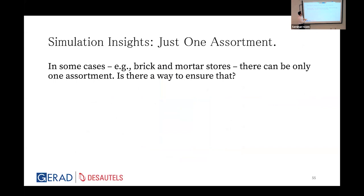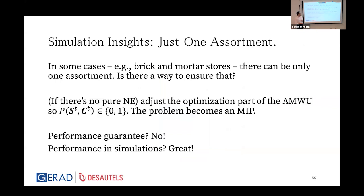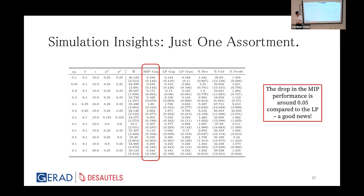For the brick-and-mortar extension: these stores cannot randomize — they need just one assortment. If a pure Nash equilibrium exists the solution is immediate. If not, we modify the LP into an MIP by restricting probabilities to zero or one, so only one assortment is shown. While an MIP provides no performance guarantee, in practice it works well. The MIP gap — between the upper bound with randomization and the single-assortment solution — is around 0.2, showing practical viability.